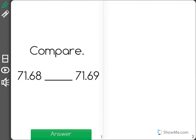Compare 71.68 and 71.69. Now when it asks us to compare, it wants to know which of the two numbers is greater. I'm going to get out some place value blocks to help me solve this problem.